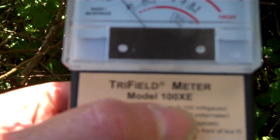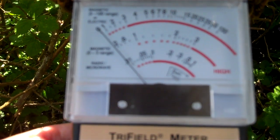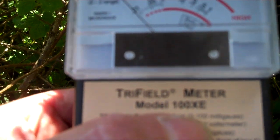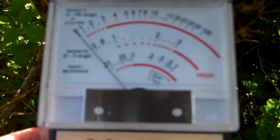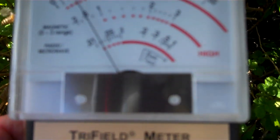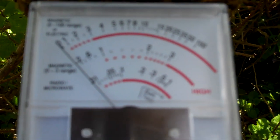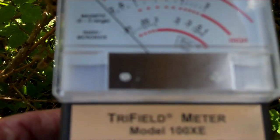I'm not getting a reading on the other scales. There's various scales on here - there's one for magnetic field, one for radio frequencies - but this is an electric field meter and I'm getting some pretty strong readings. The scale is in electric fields measured in volts per meter.